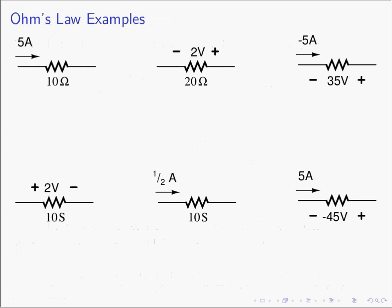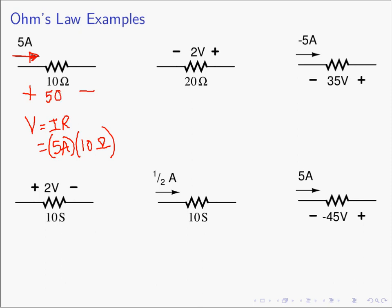Let's put Ohm's Law into use. In the first example, we have a current of 5 amps flowing to the right. The passive sign convention requires the current to enter the positive terminal, so the positive polarity goes on the left. Using V equals I times R, with a current of 5 amperes and a resistance of 10 ohms, the voltage across this resistor is 50 volts.